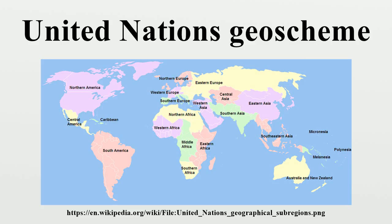Europe — see also UNGO Scheme for Europe. Sub-regions: Eastern Europe (the UN includes North Asia in this sub-region), Northern Europe, Southern Europe, and Western Europe. Together, Asia and Europe form the geographic continent of Eurasia, which is not part of the UNGO Scheme.